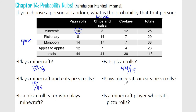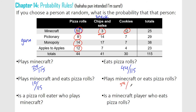Then for this one, Minecraft or eats pizza rolls. So let's look at that. Anybody that can play Minecraft, or they enjoy pizza rolls — it's all of these people. So notice we just add those up. That's 15, 25, that is 20. So that's 45, 49, 59. Out of 115.